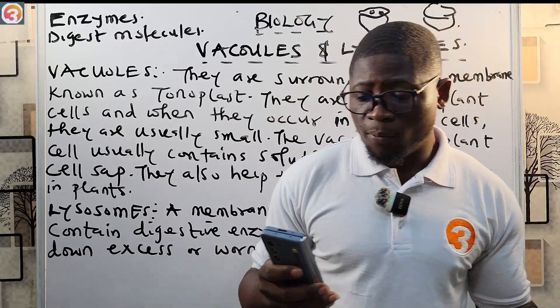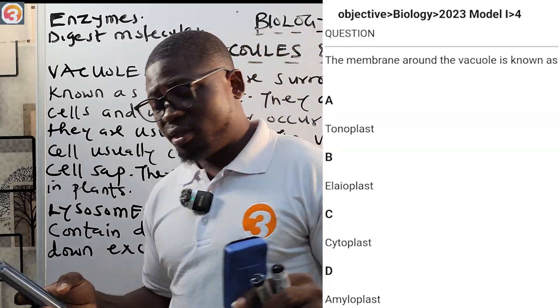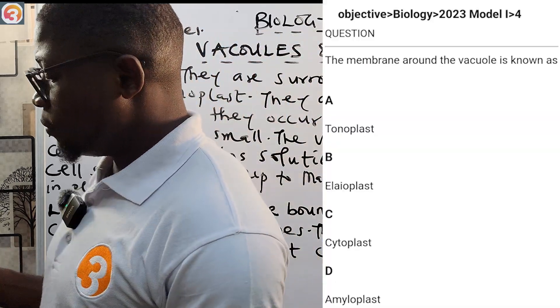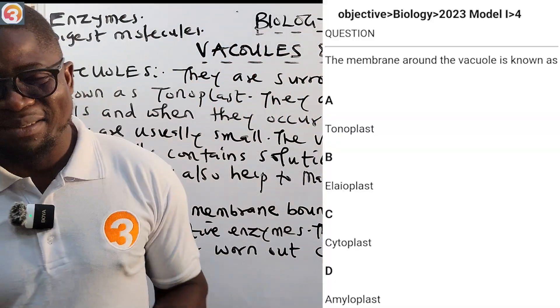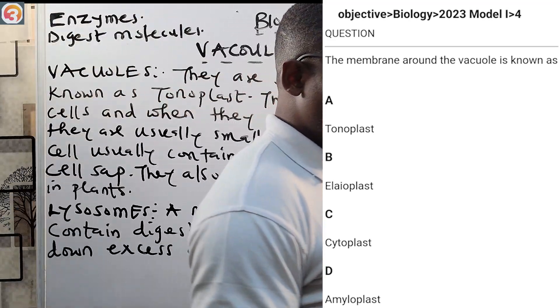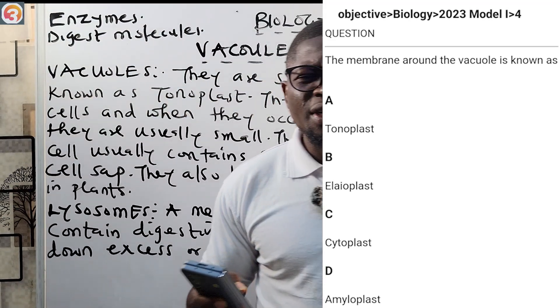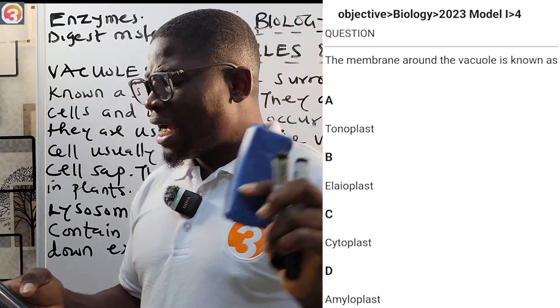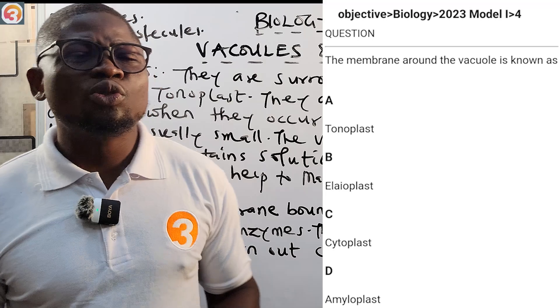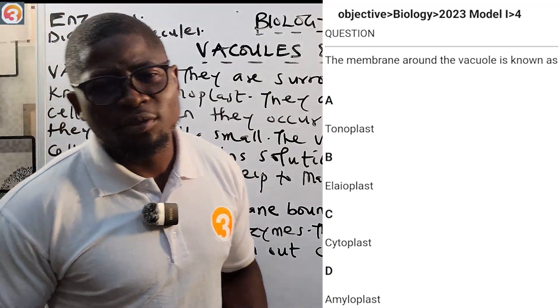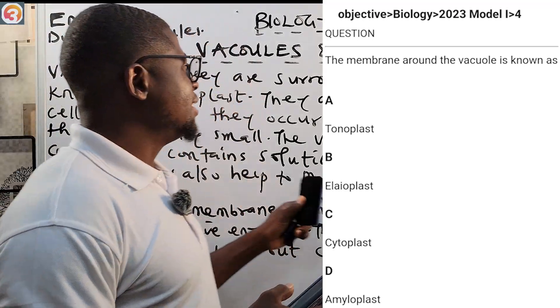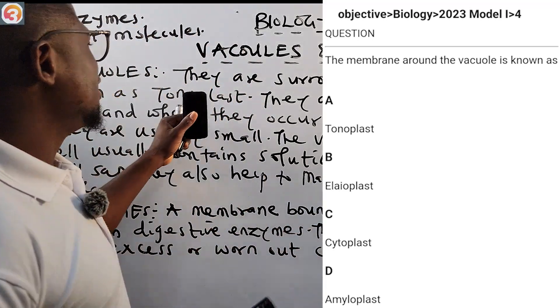We also have a 2023 question number four displayed on the screen: 'The membrane around the vacuole is known as what?' We talked about this — the answer is the tonoplast.